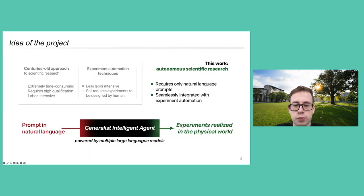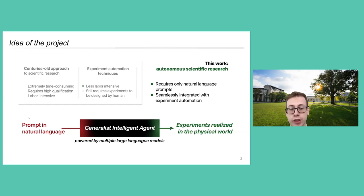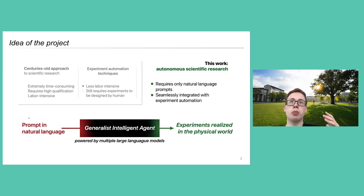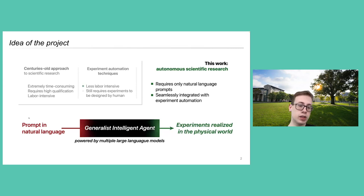LLMs have made really big progress in the recent year and are being applied almost everywhere. Personally, the coolest part of what we can do with them is that we can design systems that use various tools to achieve a goal. We move away from the way we did science before — even from traditional automation techniques where we had to define what would happen in the lab — to just taking a natural prompt and integrating it seamlessly with experimental automation.